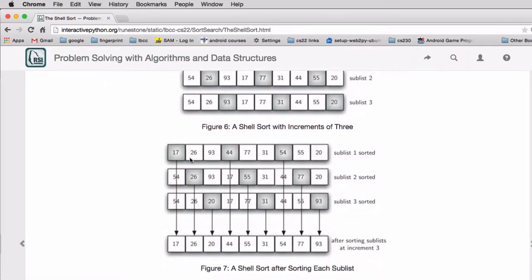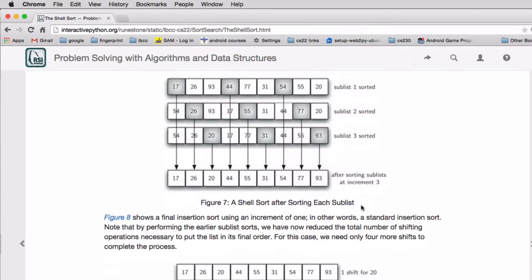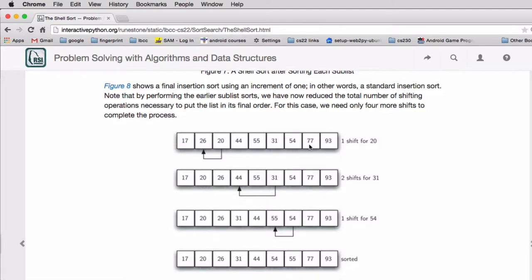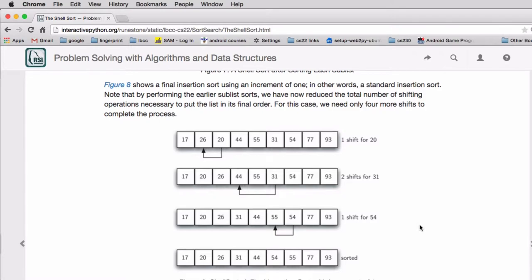So first you have this list and you sort it, and then this list and you sort that, and this list and you sort that. And eventually you get down to where you sort just the final list. Now this shows you actually sorting the final list and you end up only moving in this case three items that you have to move.